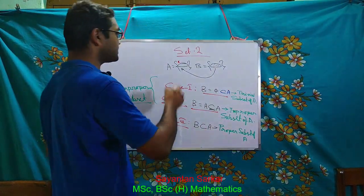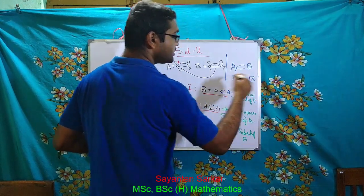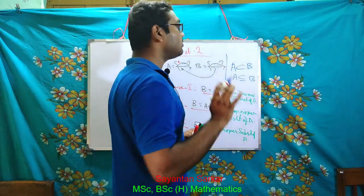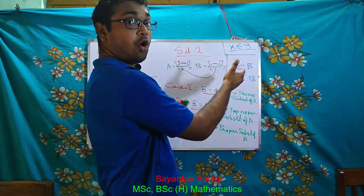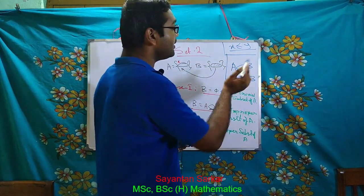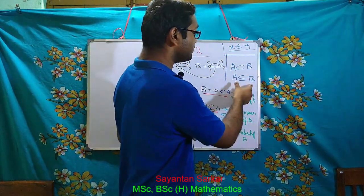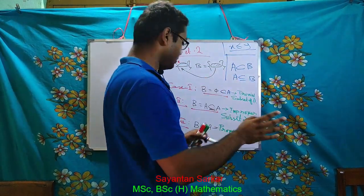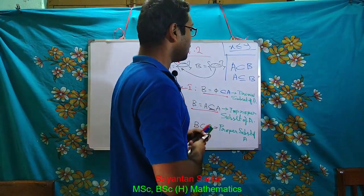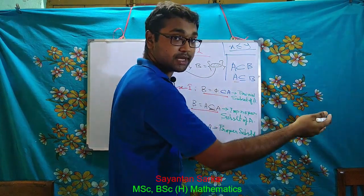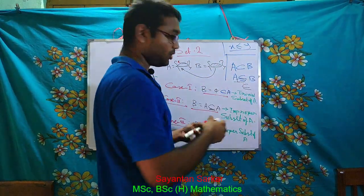One more thing: regarding the sign of subset, I have written it in two ways. When we are uncertain about two quantities in normal mathematics, we write the less-than-or-equal-to sign. The same thing happens here — when we are not certain whether A equals B or not, we write that A is a subset of B using the ⊆ sign. Just compare it with the less-than-or-equal-to sign.